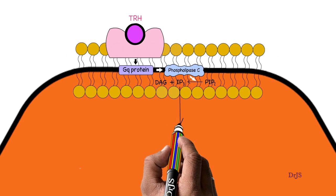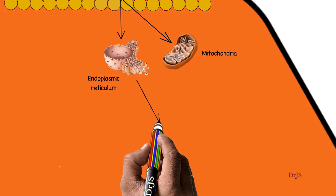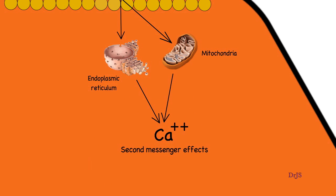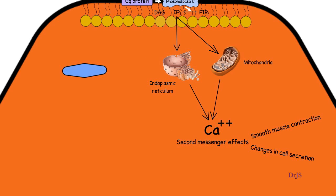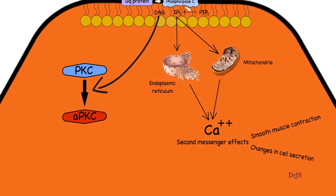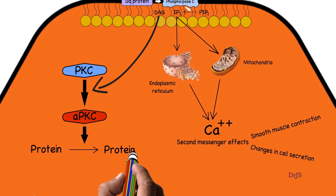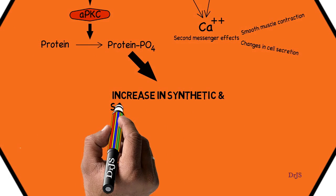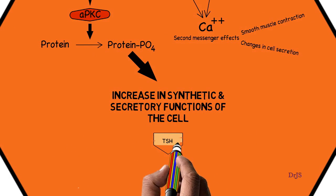Inositol triphosphate releases calcium ions from the endoplasmic reticulum and mitochondria into the cytoplasm. This calcium acts as a second messenger causing changes in cell secretions. The protein kinase C present in the cytoplasm is activated by diacylglycerol, forming active protein kinase C. This activated protein kinase C phosphorylates proteins and increases the cell's synthetic and secretory machinery, ultimately leading to the formation and secretion of TSH.